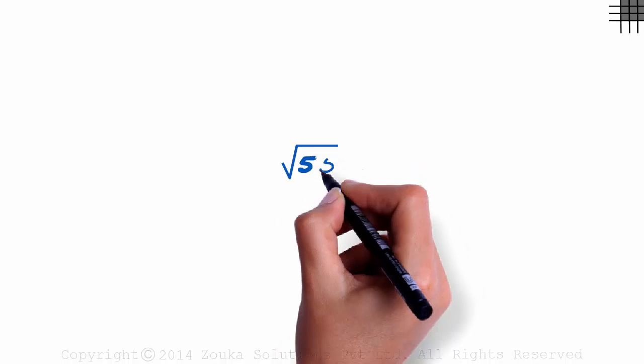What is the square root of 55? Now we know that 55 is not a perfect square, which means the answer will not be an integer.